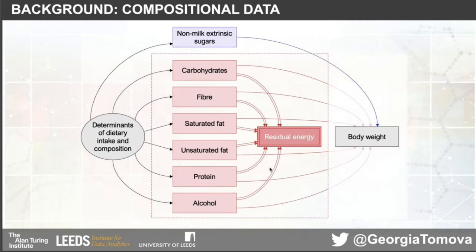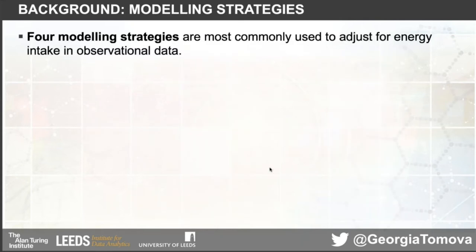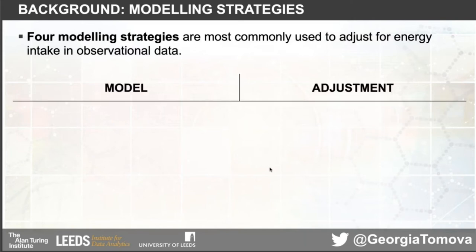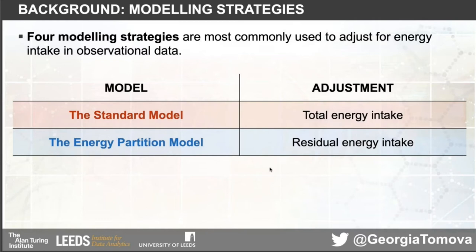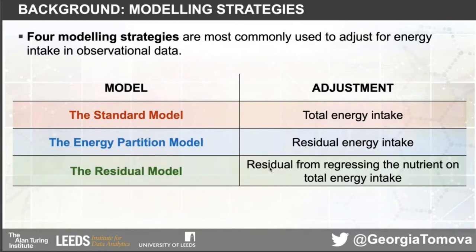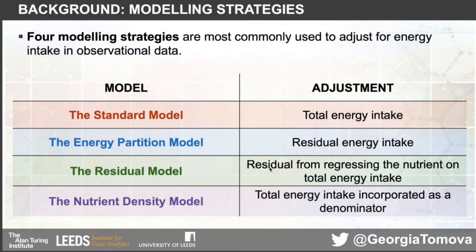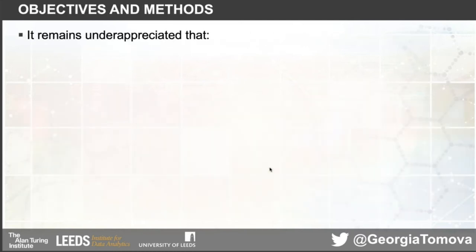Residual energy intake is the sum of all components excluding our exposure, so the substitution doesn't occur. There are four modeling strategies most commonly used to adjust for energy intake in observational data: the standard model, which adjusts for total energy; the energy partition model, which adjusts for residual energy; the residual model, which uses the residual from regressing the nutrient on total energy intake as the exposure; and the nutrient density model, which adds total energy as a denominator, transforming the exposure into a proportion of energy intake.